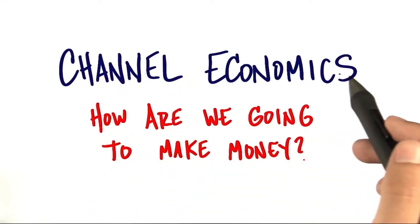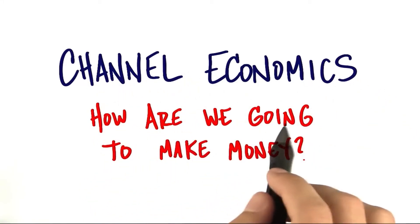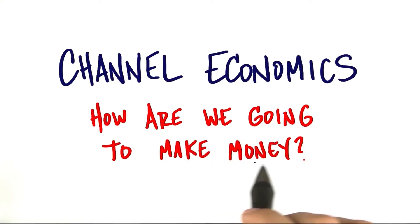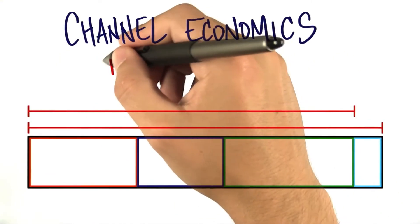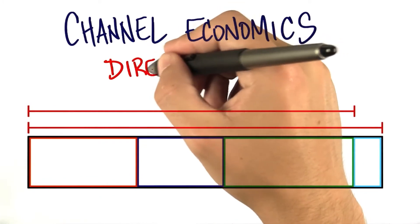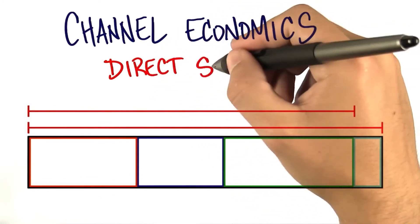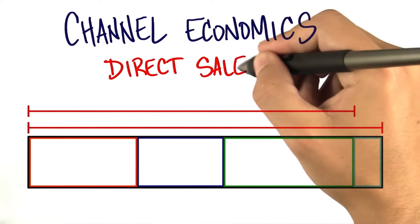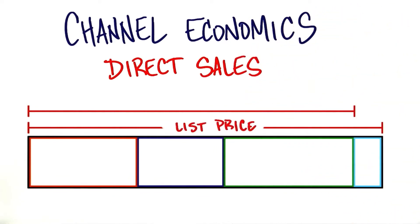So let's take a look at the channel economics — in other words, how are we going to make money? Let's take a look at a direct sales example. You have a sales force and you're selling directly to the end consumer. Let's assume that the list price of your product is $100.